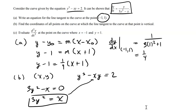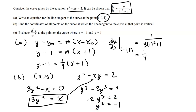By substituting x equals 3y squared into the original equation, we get y cubed minus 3y squared times y, which is y cubed minus 3y cubed equals 2. Combining like terms: negative 2y cubed equals 2, so y cubed equals negative 1. Taking the cube root of negative 1, we get y equals negative 1 — since negative 1 times negative 1 times negative 1 equals negative 1. That's the only real answer.